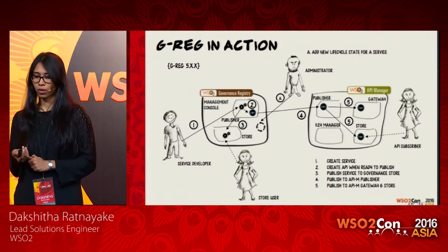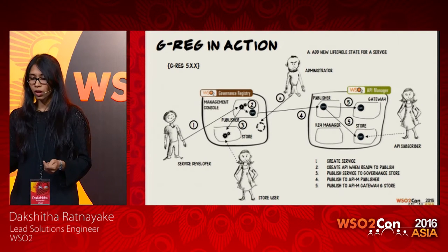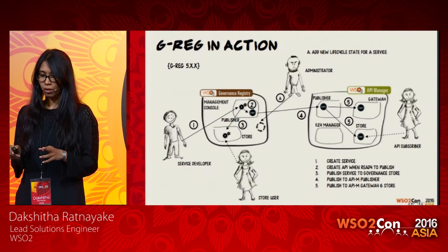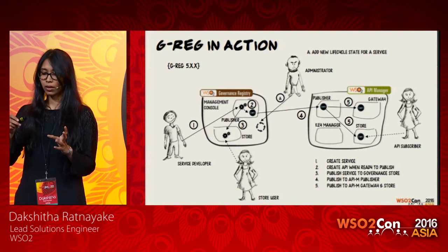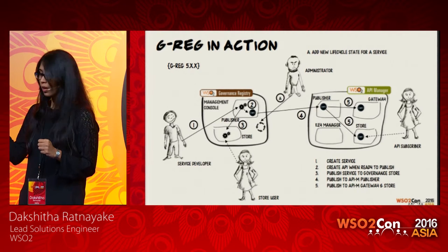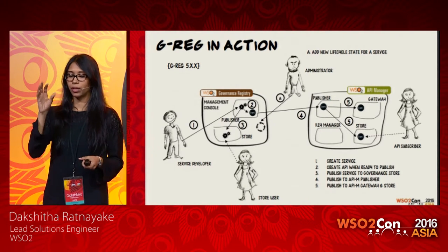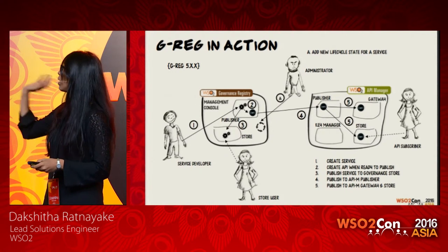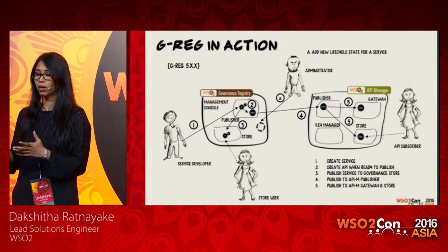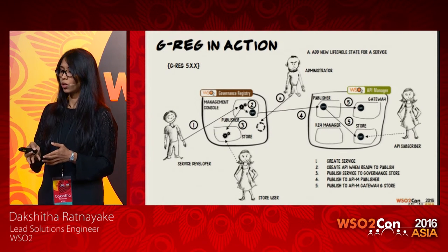To address the second problem — not creating services twice — the service developer creates a service, which goes through a service lifecycle. When it's ready to be published as an API, it's published to the API manager's publisher as well as appearing in the governance registry's own store. Once published, it goes to the API manager's publisher, and in the API manager that API goes through its own API lifecycle, after which it's published to the gateway and store.